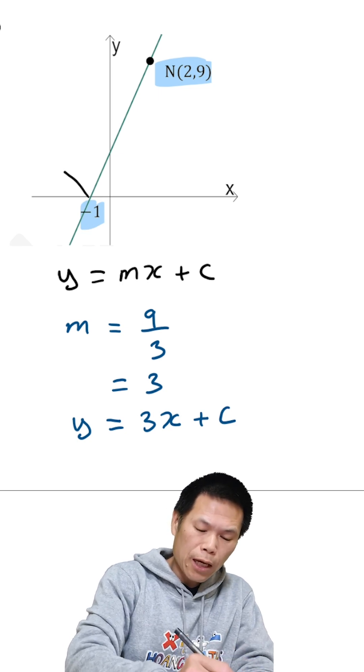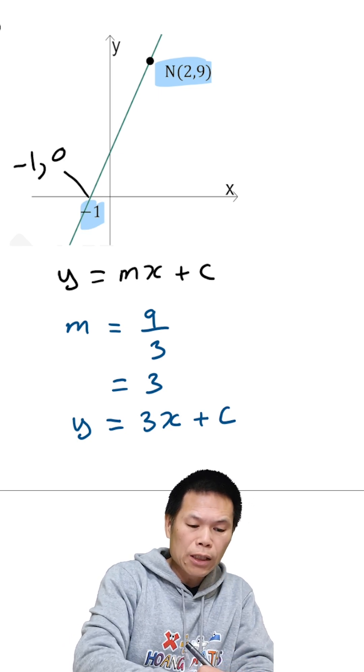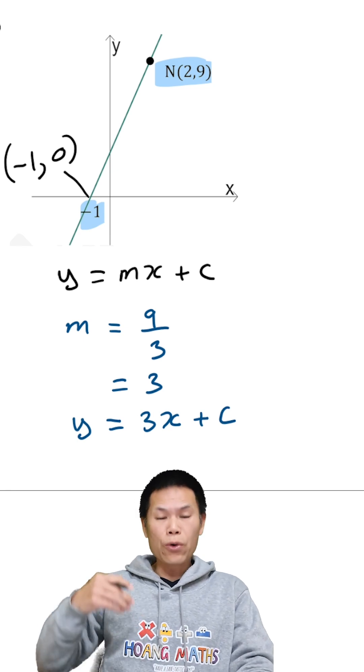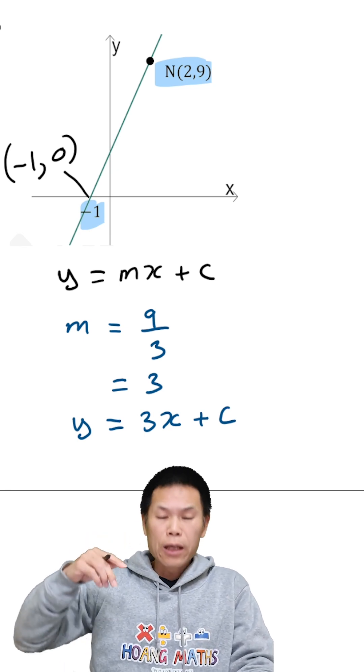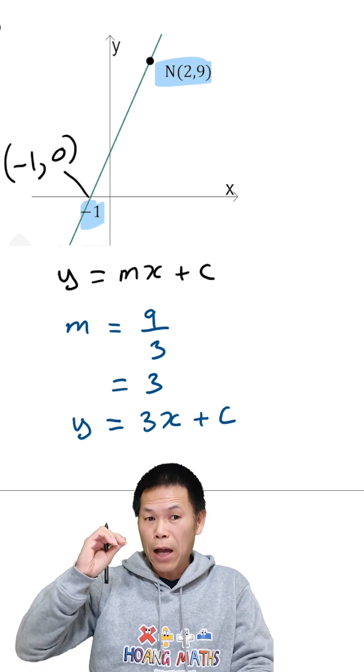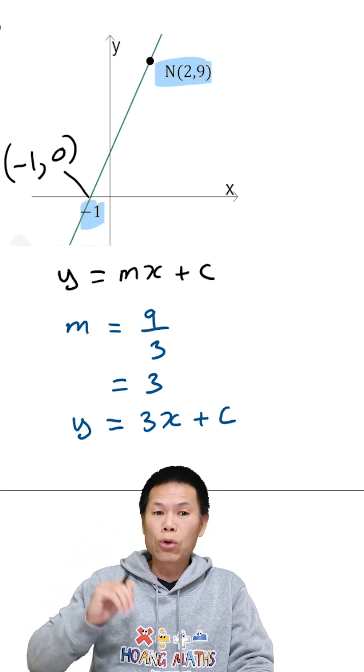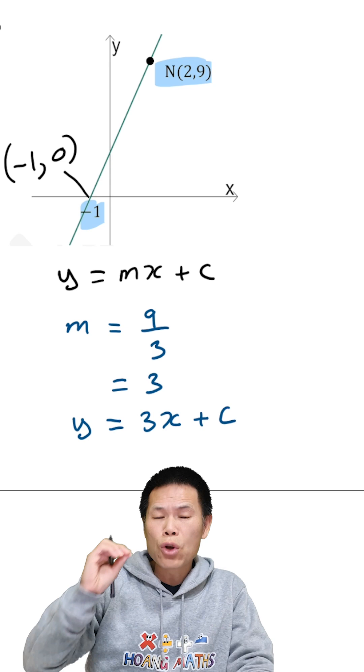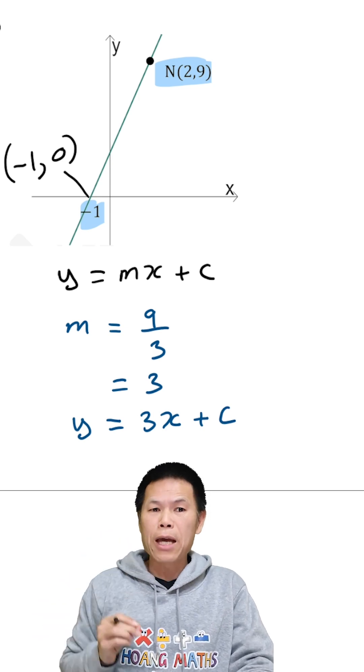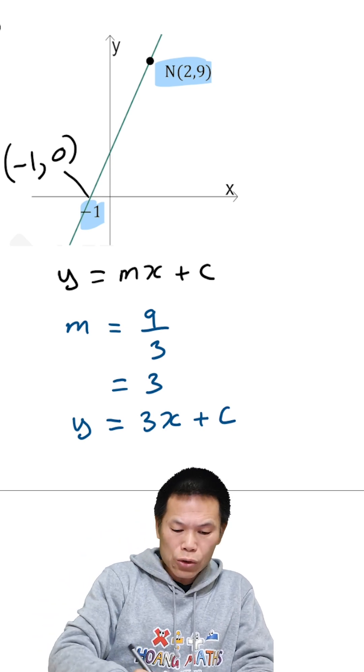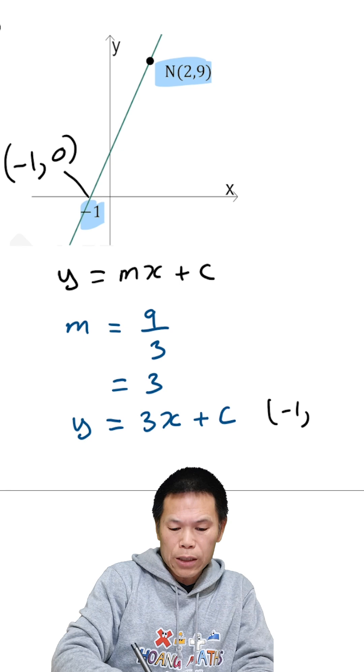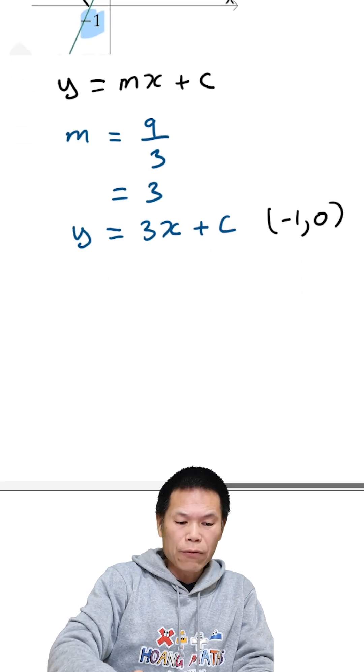This point here is negative 1, 0. So either one of these points, we can use that to find the value of c. So let's just use negative 1, 0, quicker. Of course, you can use 2, 9, and you should get the same answer. So I just use the point negative 1, 0 to find the value of c.